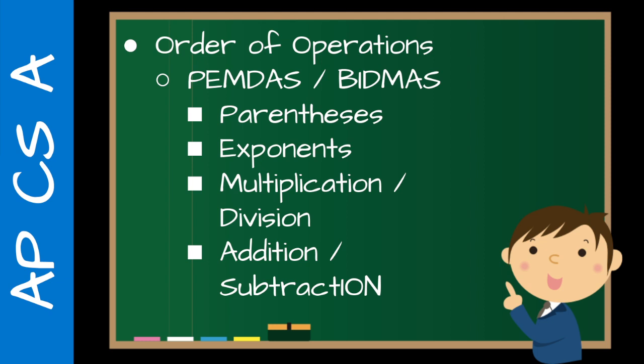We start with parentheses, then exponents, then multiplication and division — notice they're on one line, so if you have both in one equation you go left to right. That's why in BIDMAS the D and M are reversed compared to PEMDAS. Then finally, addition and subtraction are at the end, also evaluated left to right.